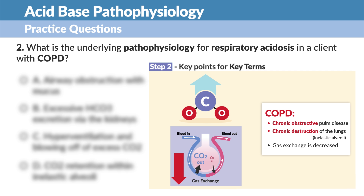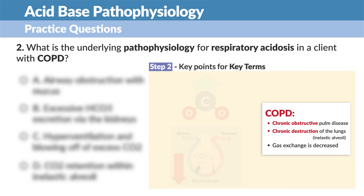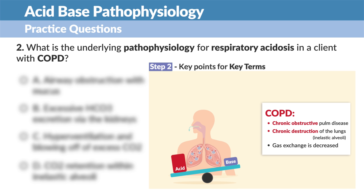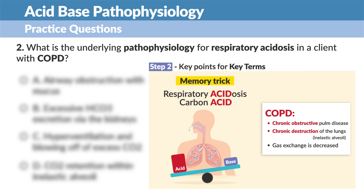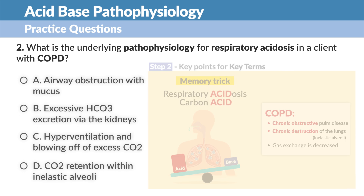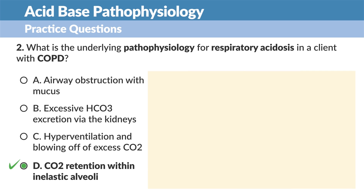Retaining more CO2 in COPD basically pushes the body into respiratory acidosis from too much carbon dioxide — which I call 'carbon diacid' as a memory trick, because it pushes the body into acidosis. So option D would be the most correct here. But let's break down the other options real quick.